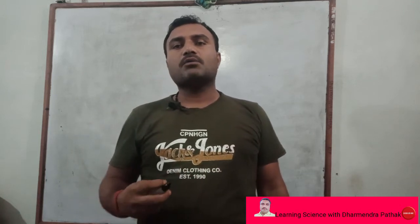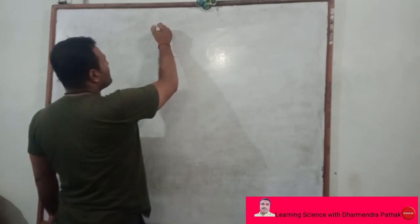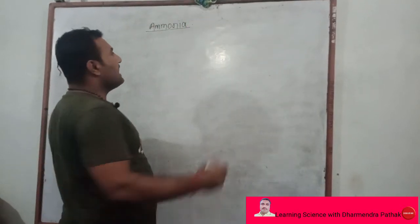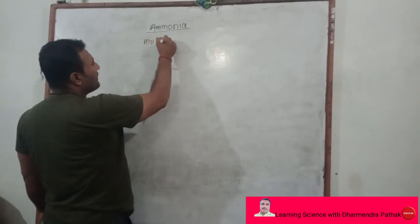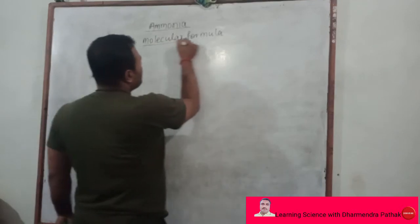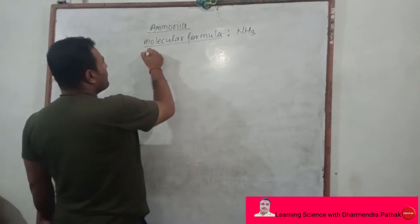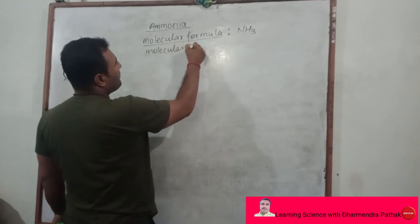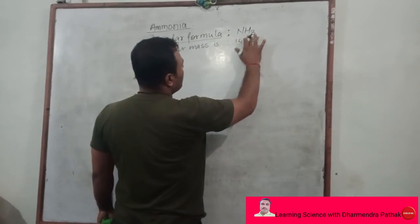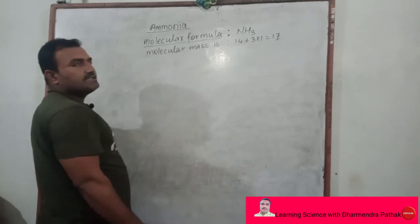First, we discuss about what is ammonia. Ammonia is a chemical compound made up of one nitrogen and three hydrogen atoms. Its molecular formula is NH3. Its molecular mass is: nitrogen 14, plus 3 hydrogen at 1 each, therefore 14 plus 3 equals 17 AMU.